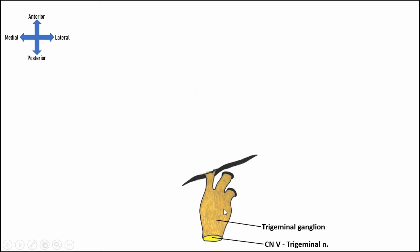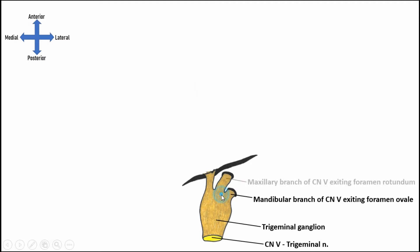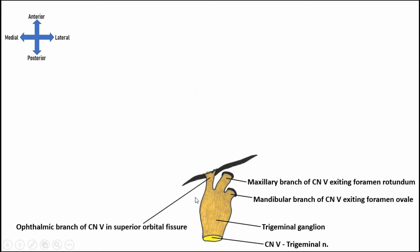Those axons then travel through three different branches. V3, the mandibular branch of the trigeminal nerve, goes through the foramen ovale. V2, the maxillary branch, goes through the foramen rotundum. And V1, the ophthalmic branch, goes through the superior orbital fissure to enter the orbit itself, where it branches into three long nerves pretty quickly.